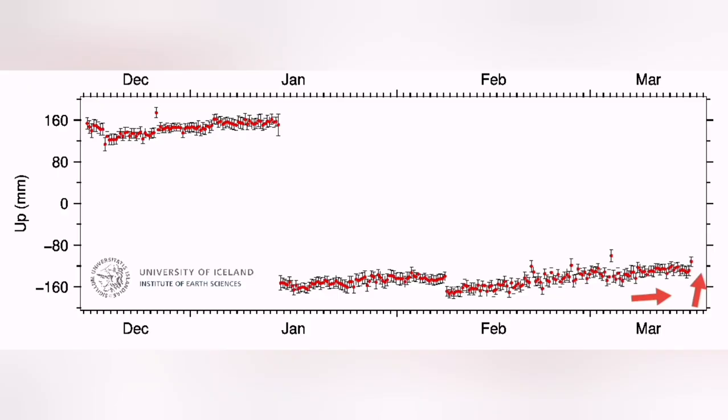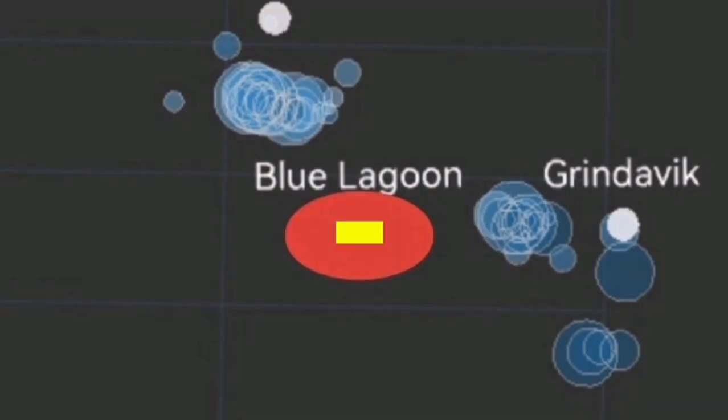And further down toward the east of Grindavik, we have this AUSV, which actually shows again some uplift due to the accumulation of magma, not as much as the previous one.